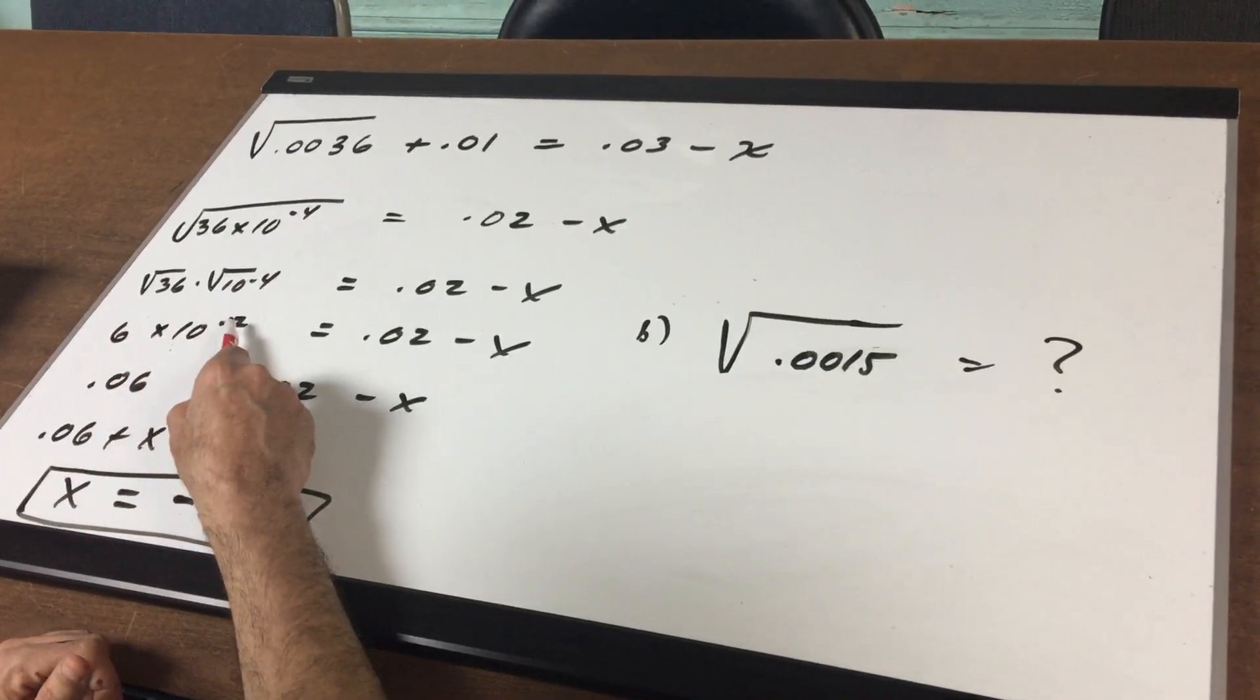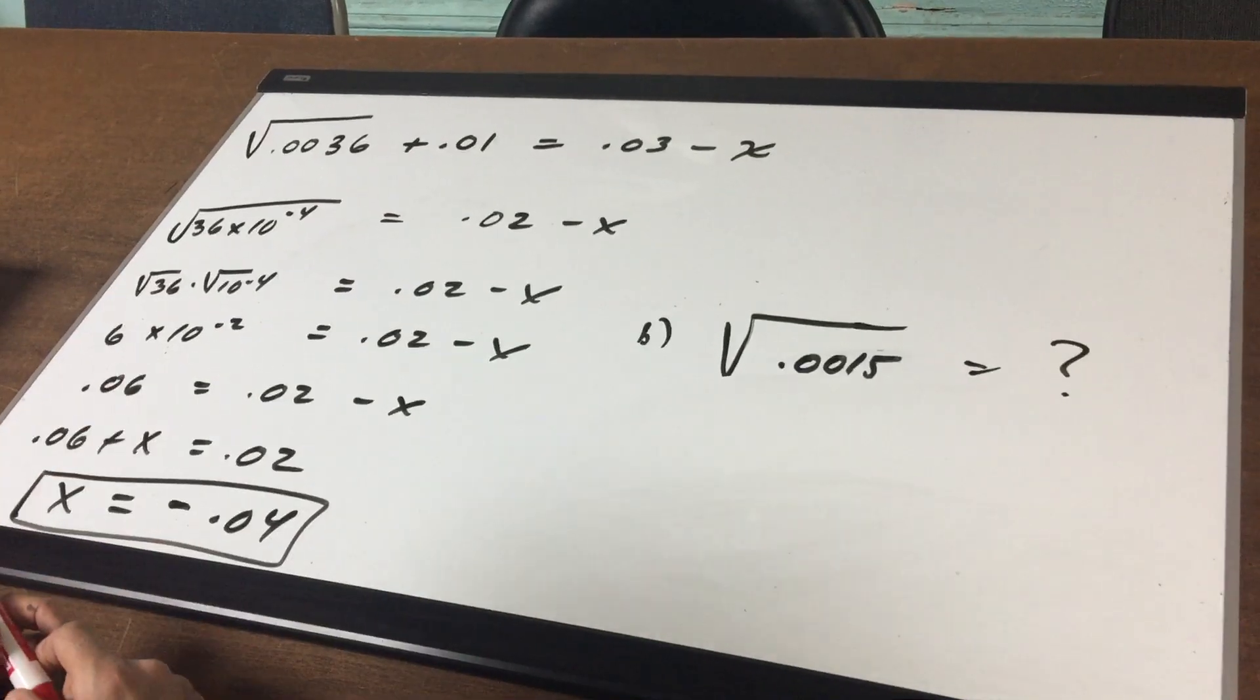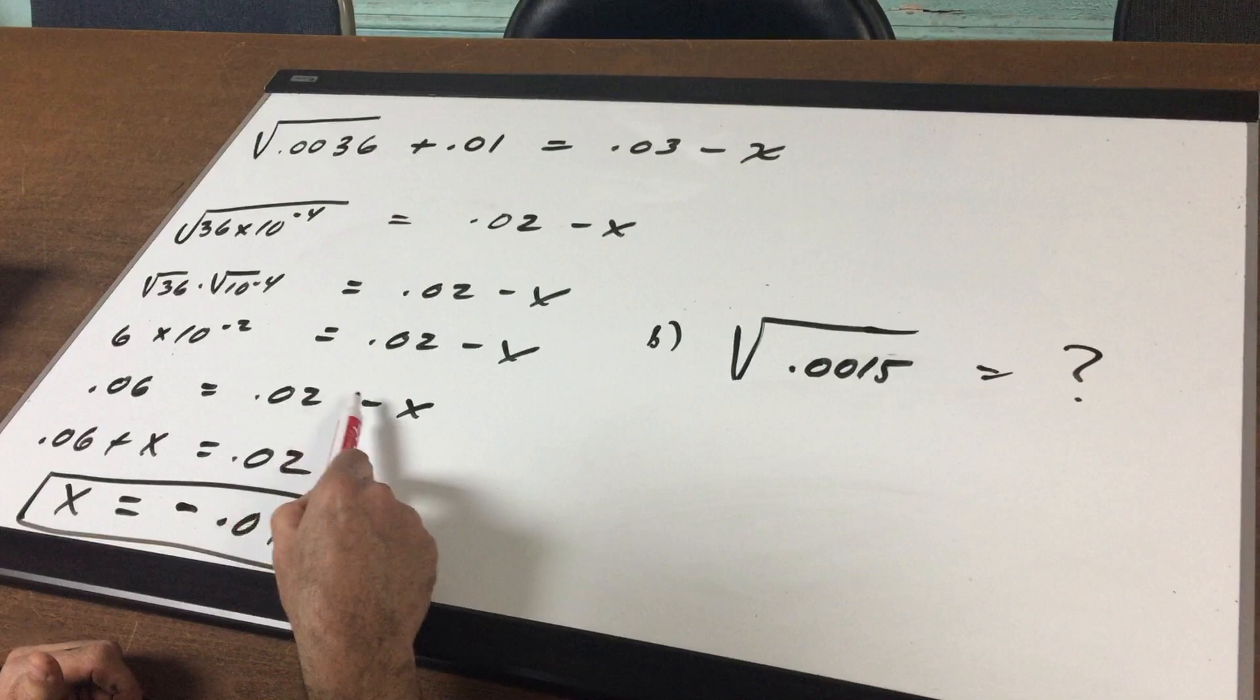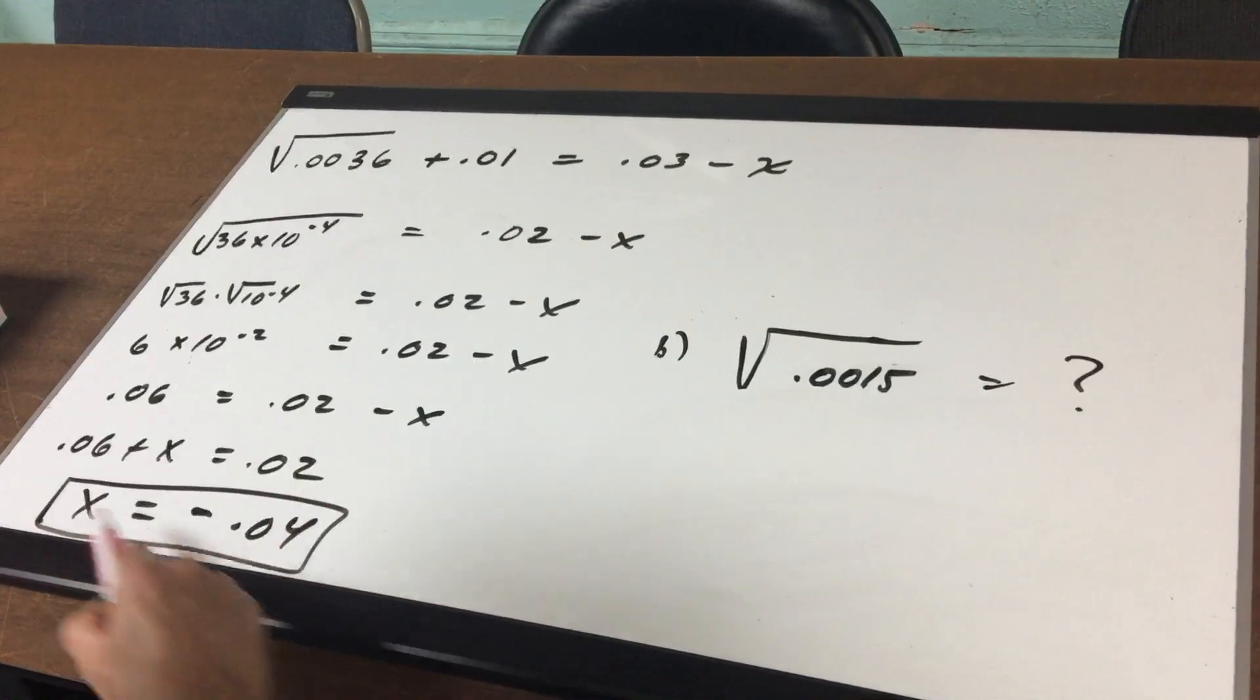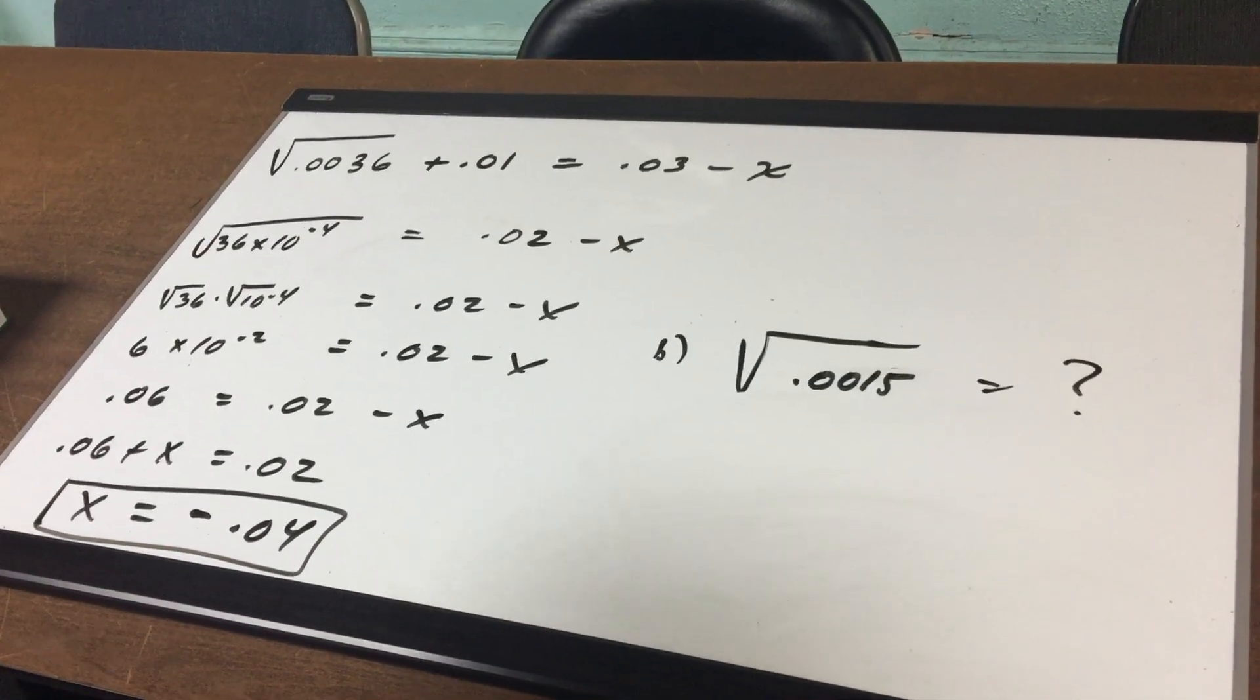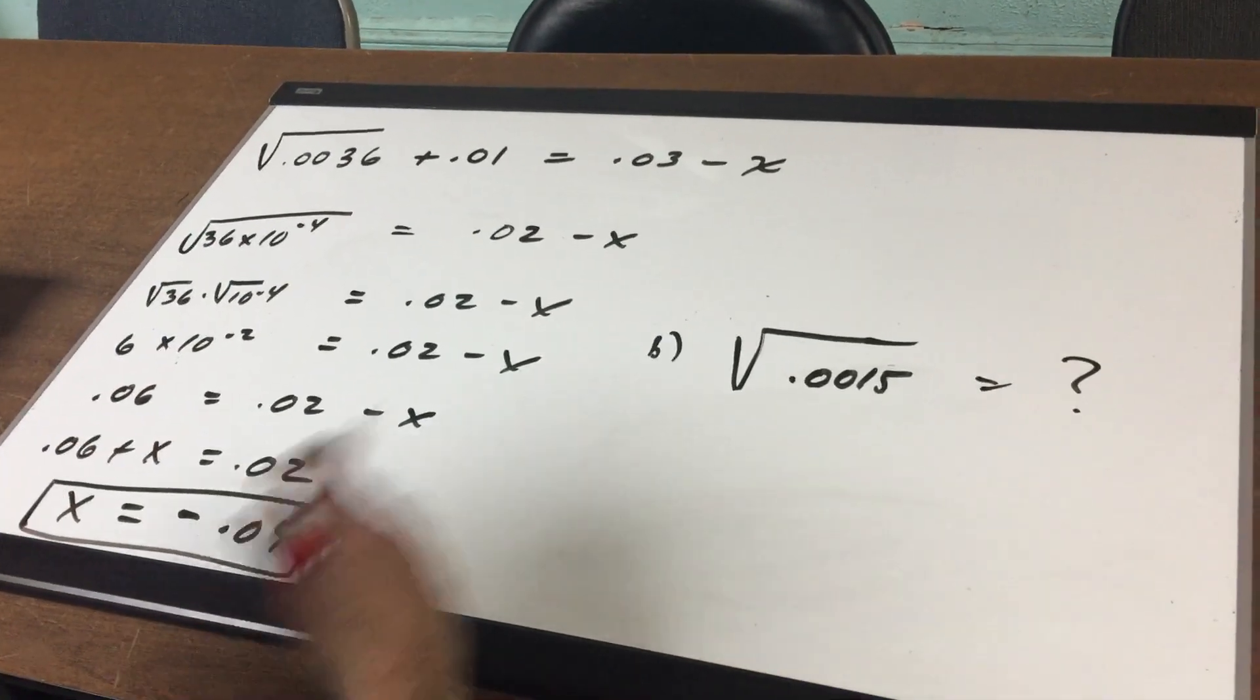6 times 10 to the minus 2 is the same as saying 0.06, so we get 0.06 equals 0.02 minus X. I'm going to bring the X to the other side and then subtract 0.06, and that gives me X equals minus 0.04. Hopefully you can do a real simple question like that.